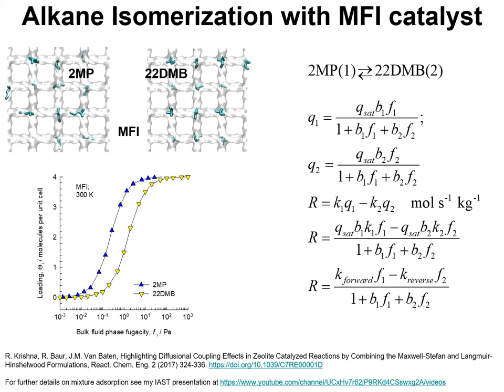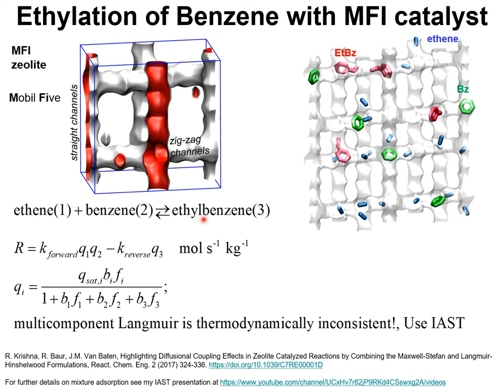The ethylation of benzene to produce ethylbenzene is an industrially important reaction catalyzed by MFI zeolite. The dehydrogenation of ethylbenzene results in the production of styrene, a feedstock for producing polystyrene. The reaction rate expression is written such that the forward reaction rate is proportional to the product of the adsorbed phase loadings of components 1 and 2, and the reverse reaction rate is proportional to the molar loading of ethylbenzene within the catalyst. This raises the question of how to set up the proper expressions for Q1, Q2, and Q3.